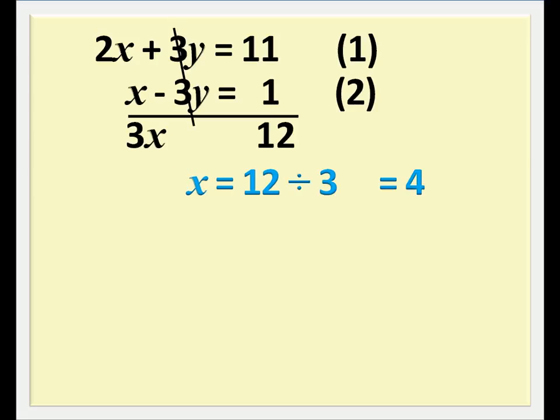Making x a standalone, the 3 multiplying x at the left hand side must move to divide the 12 at the right hand side, giving us 4. So, x equals 4.